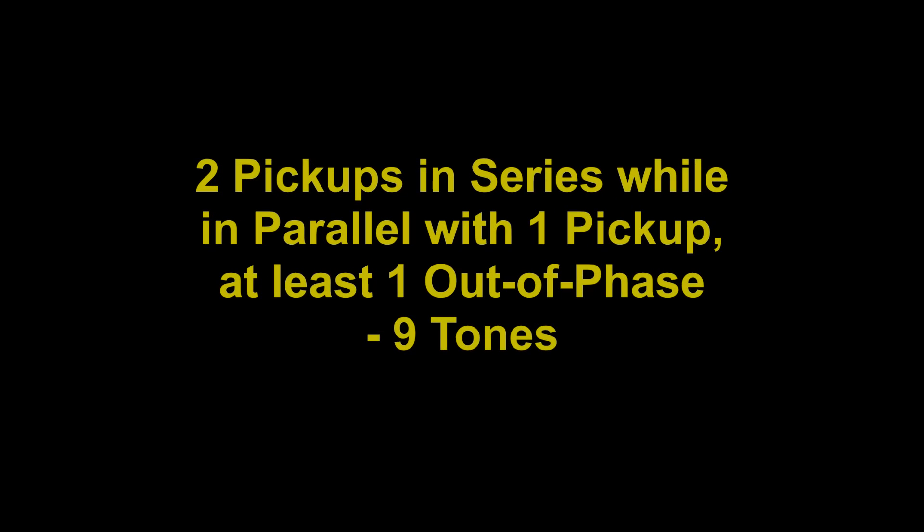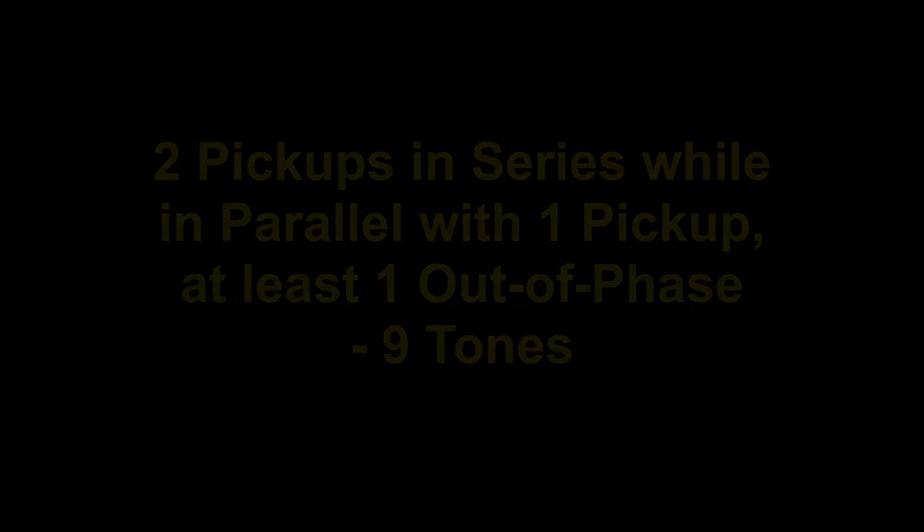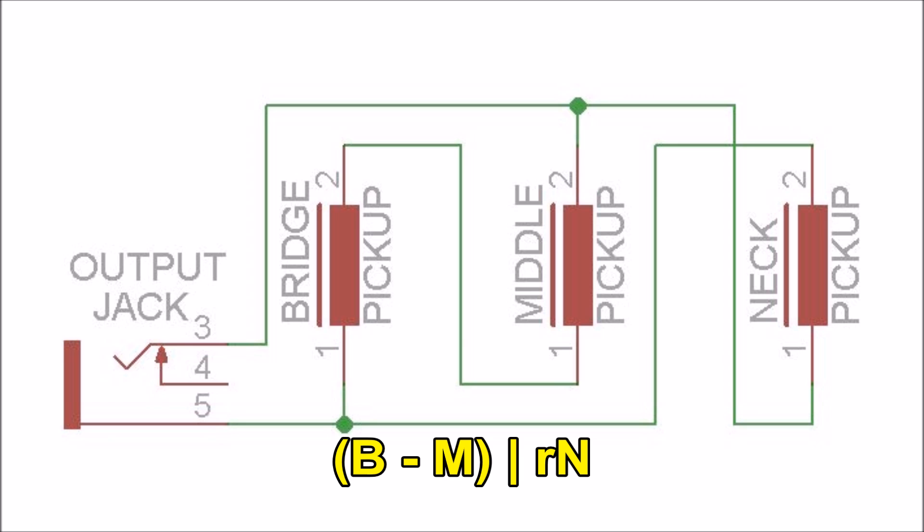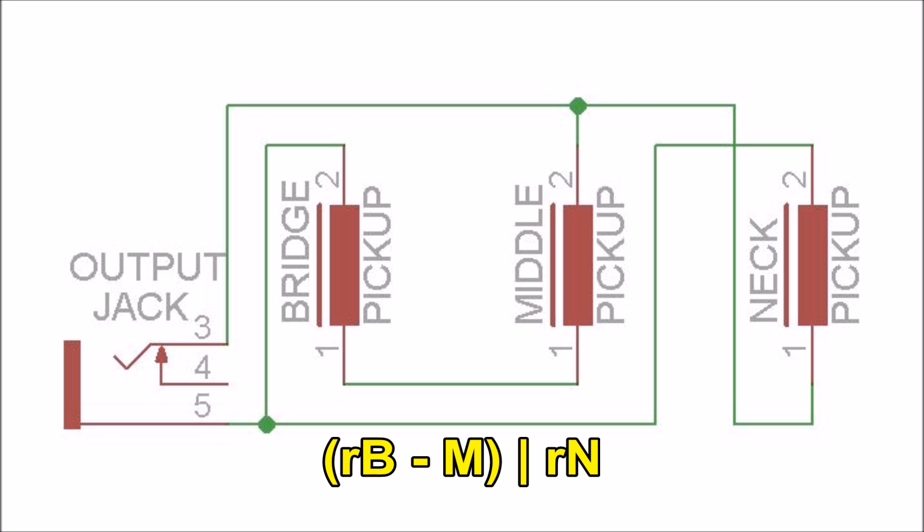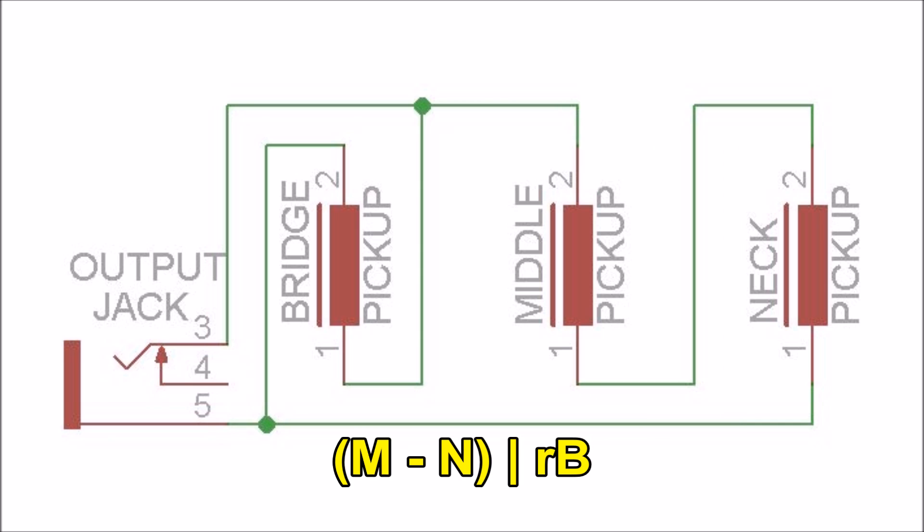The arsenal of pickup tones of the Stratocaster guitar is for the adventurous and creative. 47 is merely a base figure, and the number of tones dramatically increases when a single coil pickup is replaced by a humbucker pickup that has four wires to access its coils independently, bearing in mind that a humbucker pickup can produce six unique tones.